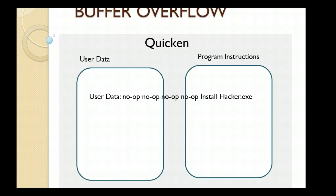You can overflow the user data portion with these no-op commands until it gets into the program instructions area. And once you're there, you can cause the machine to do anything you want. You are limited to whatever credentials the user operating the program has, but basically you could do anything. If the user running Quicken is an administrator, you can do anything — in this case, install hacker.exe, which might be inline or could be a command to go to a website, download it, and install it.